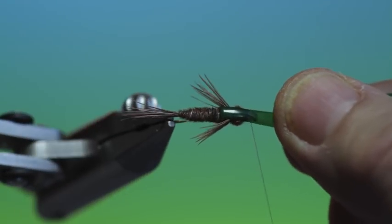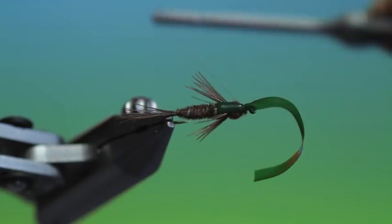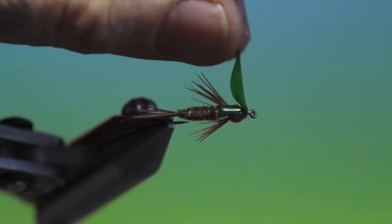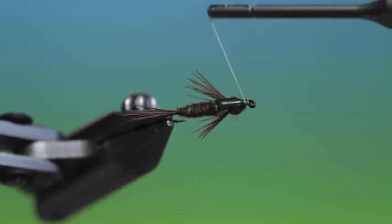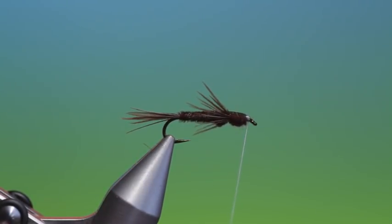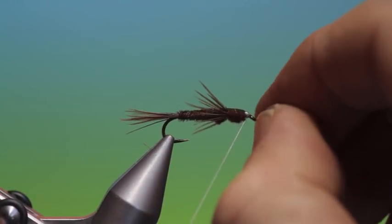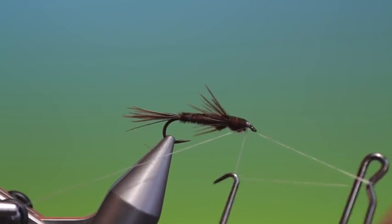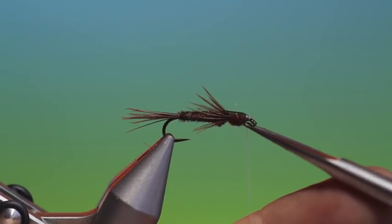So a little bit of dubbing. Pull the flexi body over and then we'll just tack that in, pull it back, make a couple of turns in front. And we stretch the flexi body and let go and cut. That makes it disappear under the tying thread. And we'll just tighten that up.